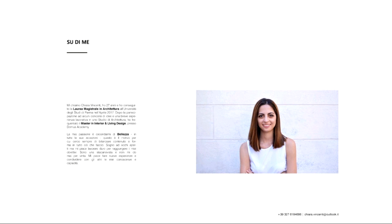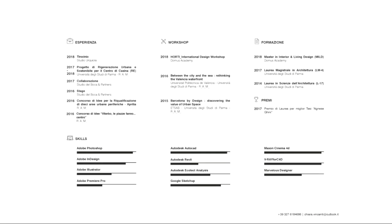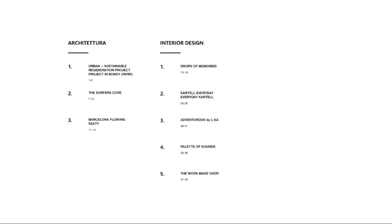Now let's go to another example — a student coming from an architecture background, specialized in interior design. This portfolio is in Italian because Chiara is Italian. Instead of just one page, she put a short text about herself followed by one visual page where we can quickly understand her skills, experiences, workshops, and awards she has won. The background is white, the information is very clear, the symbols used are readable — it takes one minute to understand her professional background.